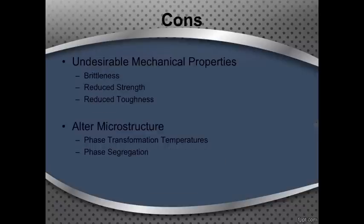There are also many cons that come with alloying elements if it's not done correctly. You could end up getting some sort of undesirable mechanical property, whether it's brittleness or a reduction in strength or reduction in toughness. Some of these properties might be desired depending on your application, but in most cases brittleness is not something that you're going for, so you can see where that would be a problem.